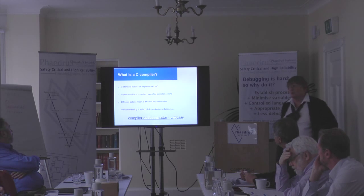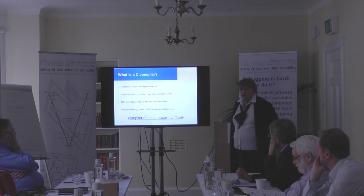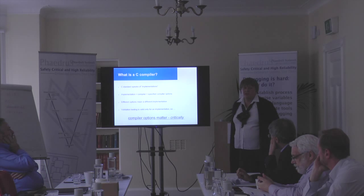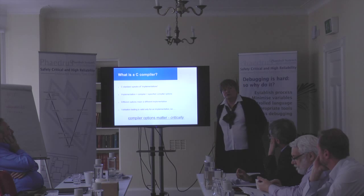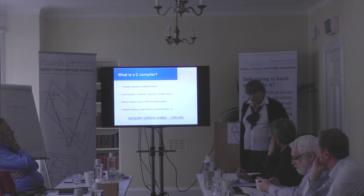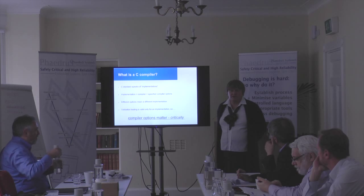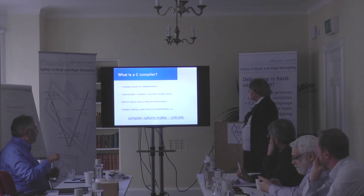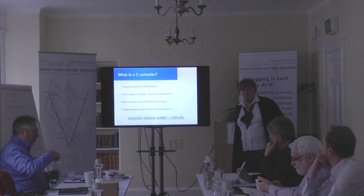What is a C compiler? The C standard speaks of implementations. An implementation is a compiler plus specified compiler options. So if you were, say, compiling something with an IAR compiler, if you change the options, you've got a different implementation. Validation works on implementations, it doesn't work on compilers. When you change the compiler options, you're validating effectively a different implementation of the language, and validation testing is valid only for an implementation — so compiler options matter critically.